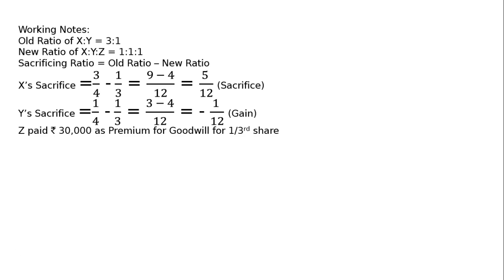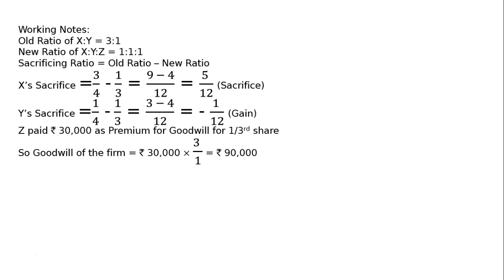Z paid Rs. 30,000 as premium for goodwill for a one-third share. Hence, the goodwill of the firm must be 30,000 multiplied by 3/1, that is Rs. 90,000. Z's one-third share is Rs. 30,000, so the total goodwill of the firm is Rs. 90,000.